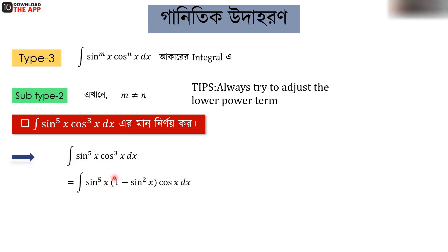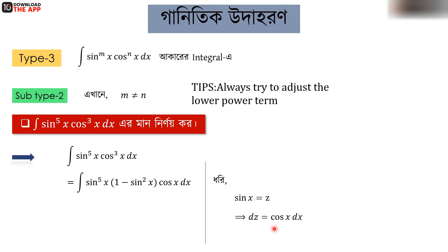We will write cos to the power 3x. Let sin x = z, then cos x dx = dz. So sin x is equal to z. cos x dx is equal to dz. We replace sin x: sin to the power 5x is equal to z to the power 5. Then sin x equals z, and cos x dx equals dz.